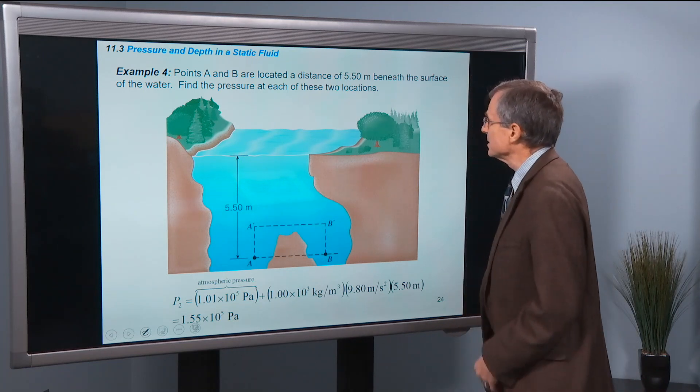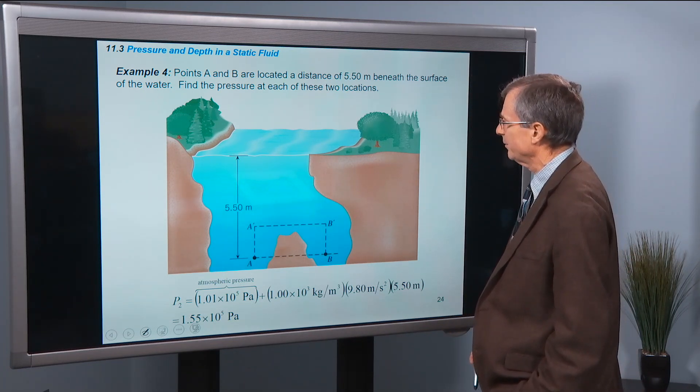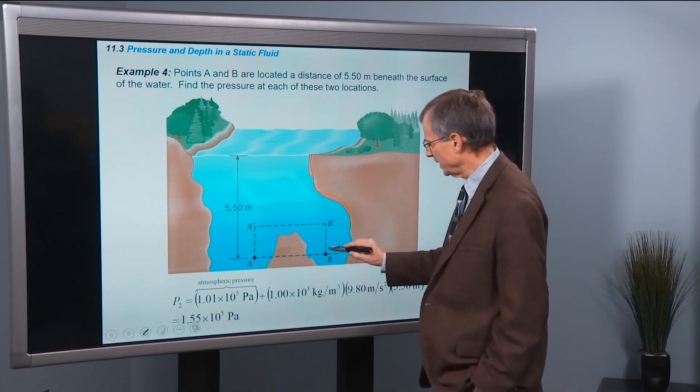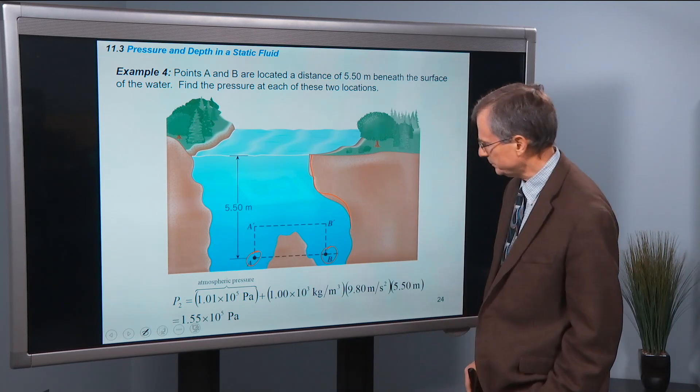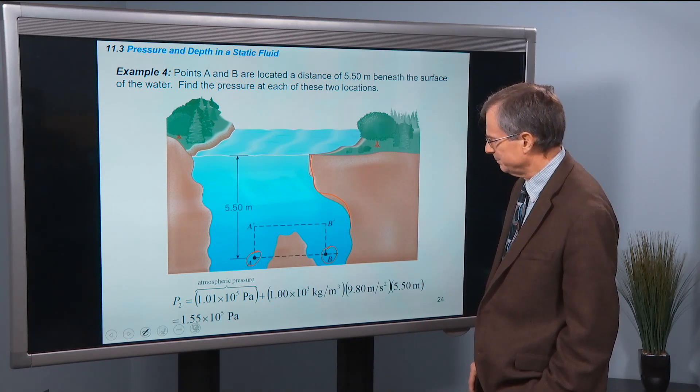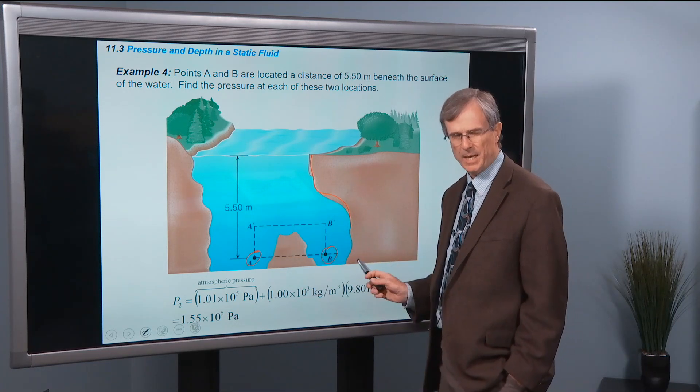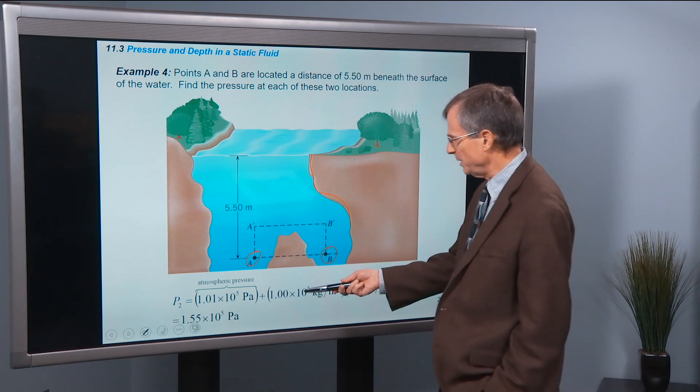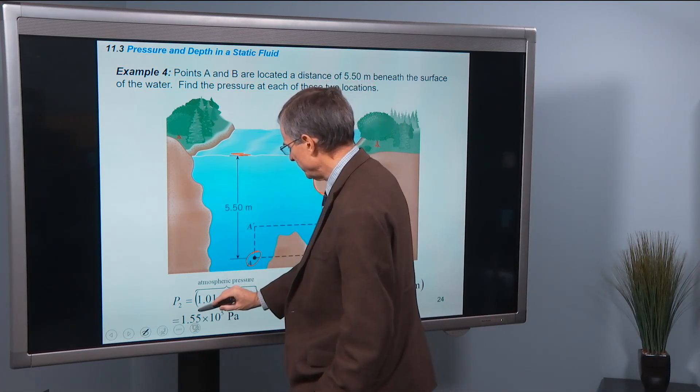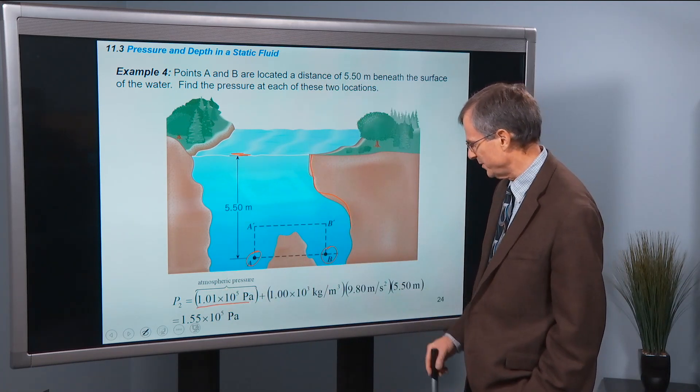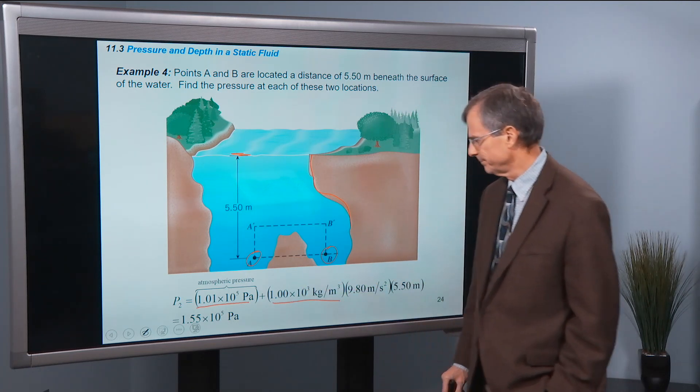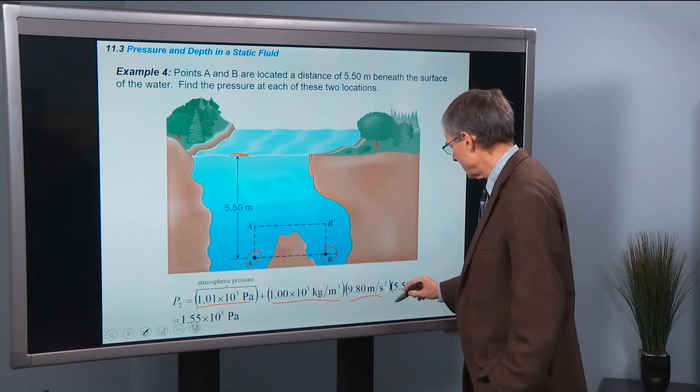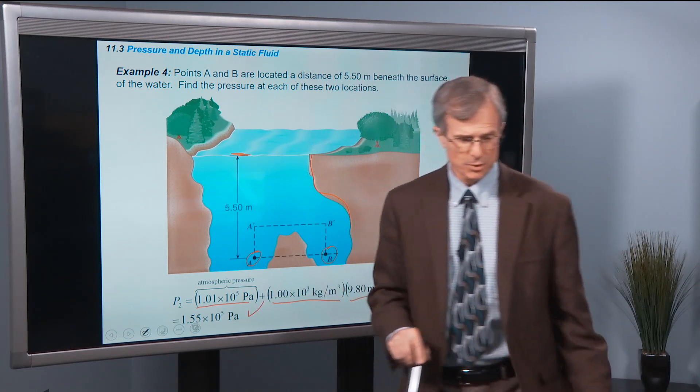An example: points A and B are located at a distance of 5.5 meters beneath the surface of the water. Find the pressure at each of these two locations. So in one case, we've got kind of a cave situation where there's an overhang, and I'm looking at the pressure at points A and B, both at 5.5 meters. The short answer is that the pressure is going to be exactly the same. If the depths of both points are the same, the pressures are the same. P2 equals P1, so the pressure at the surface is going to be atmospheric pressure, 1.01 times 10 to the fifth Pascal. Plus the density of water, which is 1,000 kilograms per cubic meter, times 9.8 times the depth. And that gives the pressure P2 at both of those places.